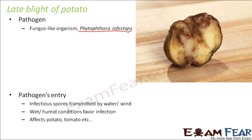The pathogen enters through infectious spores transmitted by water or wind. Wet or humid conditions favor infection because more water means more transmission of infectious spores. It mostly affects potato, tomato, and similar plants — hence late blight of potato and late blight of tomato are quite common.